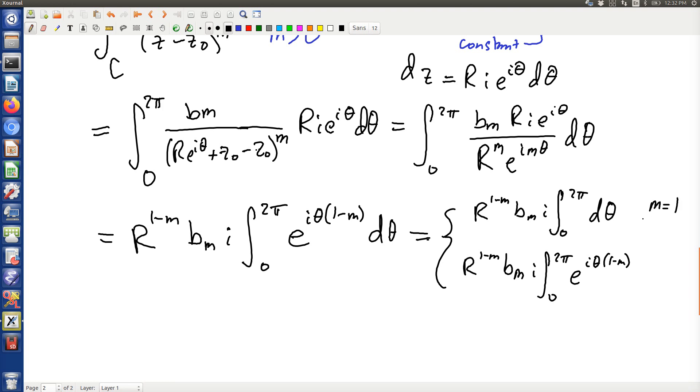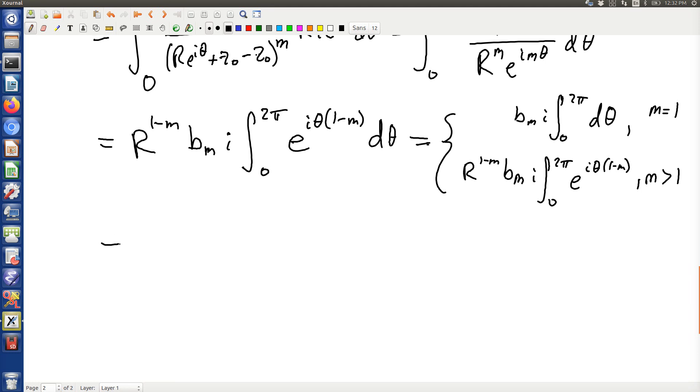This is m equals 1, m greater than 1. If m equals 1, one thing you'll notice right away is that the r thing goes away because 1 minus 1 is 0. So this first one turns into 2πi bₘ if m equals 1.